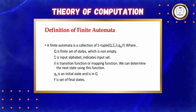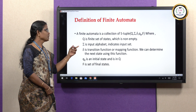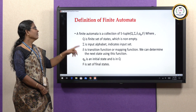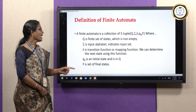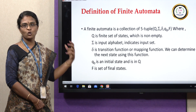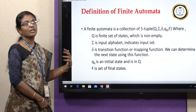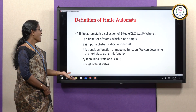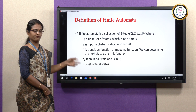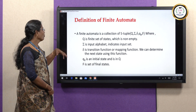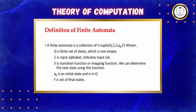The definition of finite automata: it is a collection of five important tuples — Q, Σ, δ, Q₀, and F — where Q is a non-empty finite set of states, Σ is the set of input alphabets, δ is the transition function (a mapping of Q × Σ), Q₀ is the initial state, and F is the set of final states.